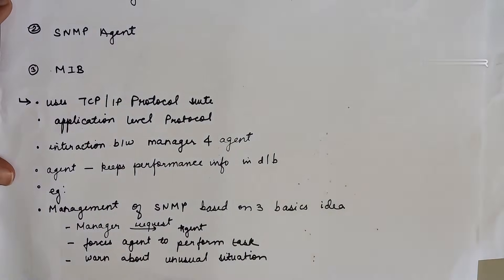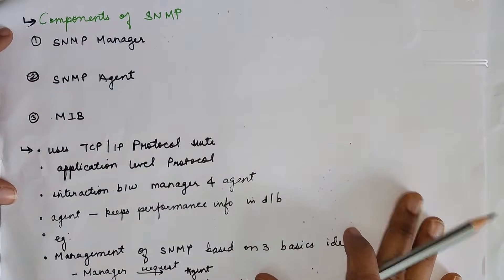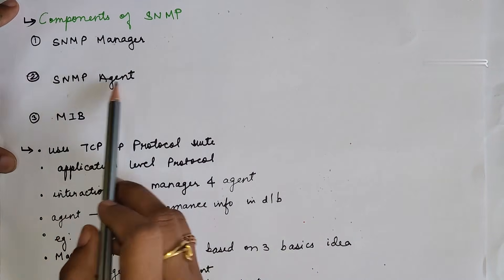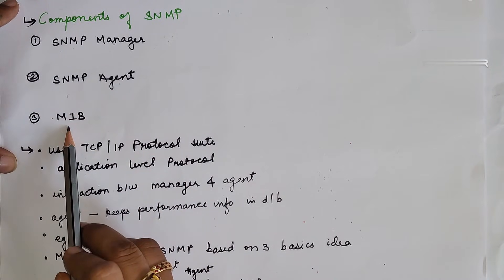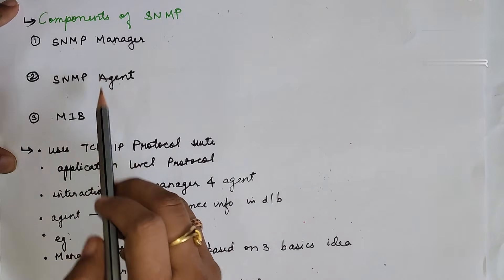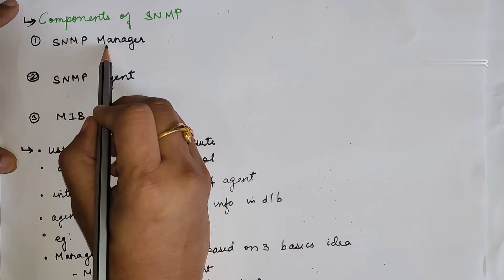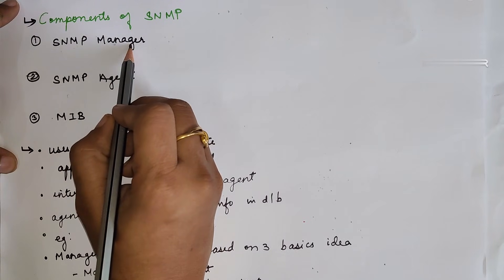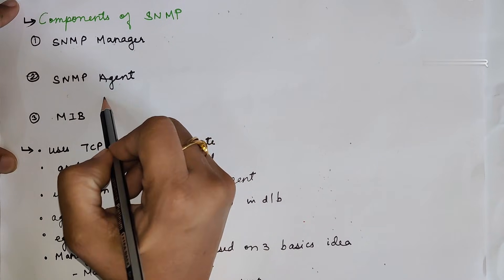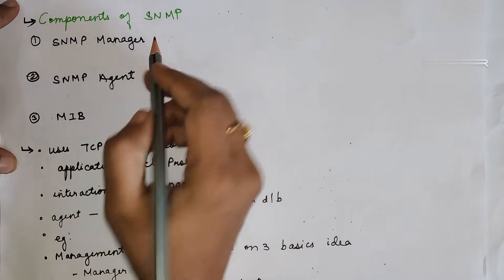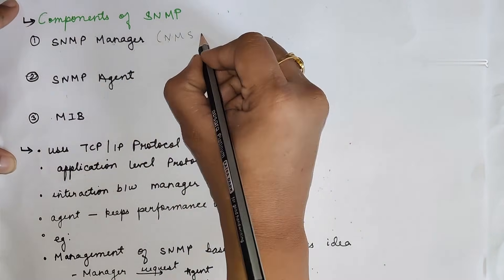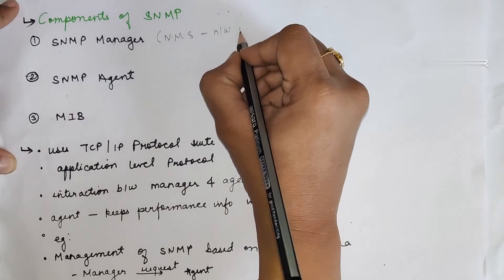Now let's review the different components of SNMP one by one. The first is the SNMP manager. It is a centralized system used for monitoring the network with the help of SNMP agents. Sometimes it is also called NMS, that is a Network Management System.